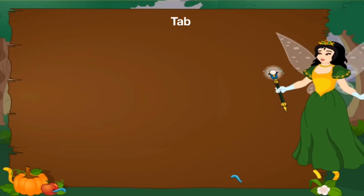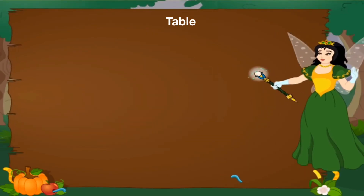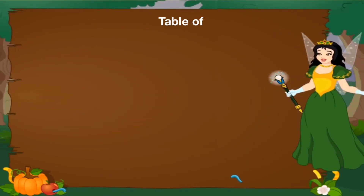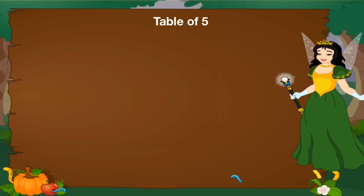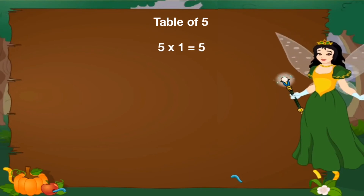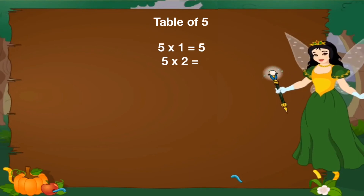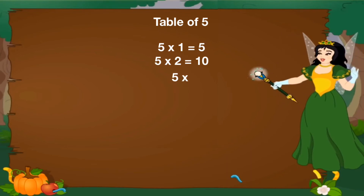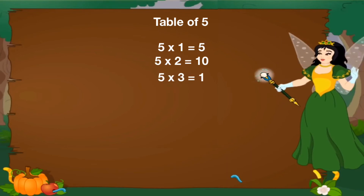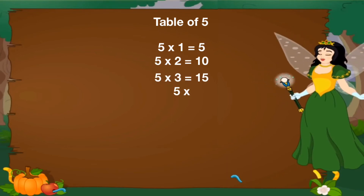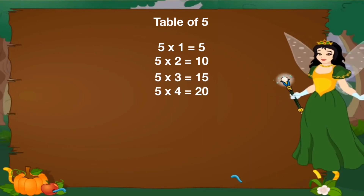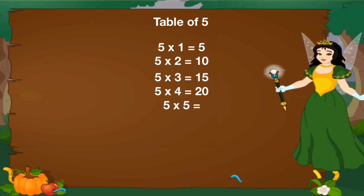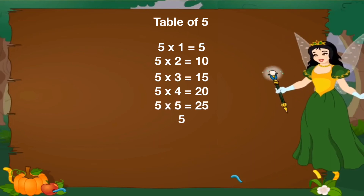Let's revise table of 5. 5 1's are 5, 5 2's are 10, 5 3's are 15, 5 4's are 20, 5 5's are 25.